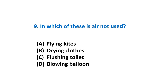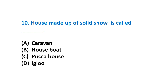Question 10: A house made up of solid snow is called what? A) Caravan, B) Houseboat, C) Pukka house, or D) Igloo.